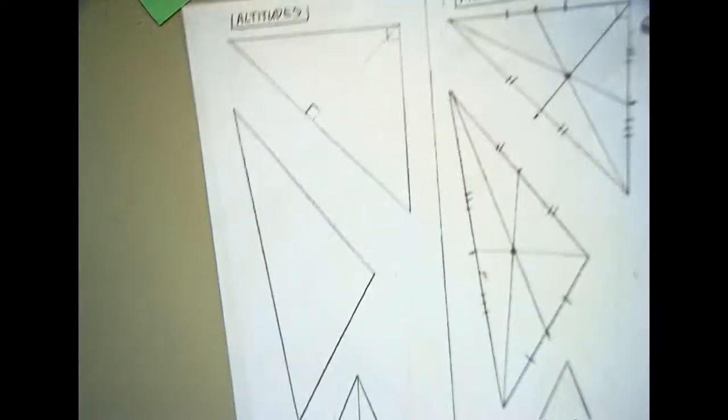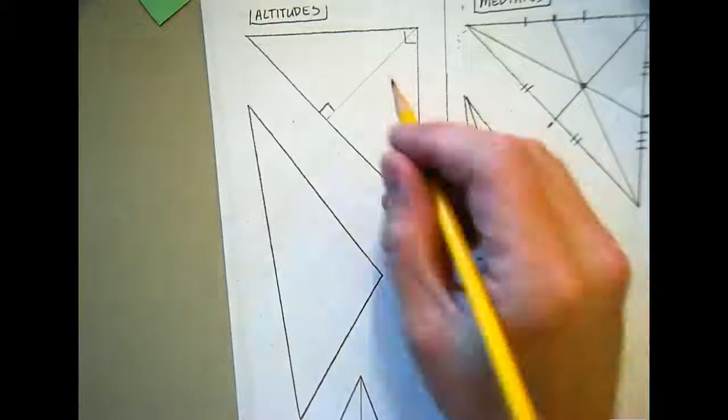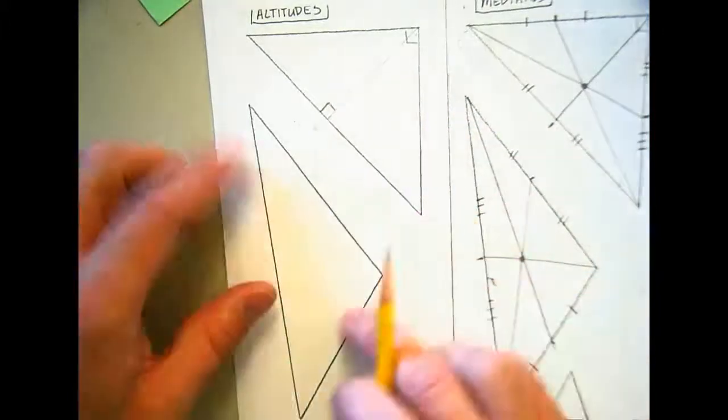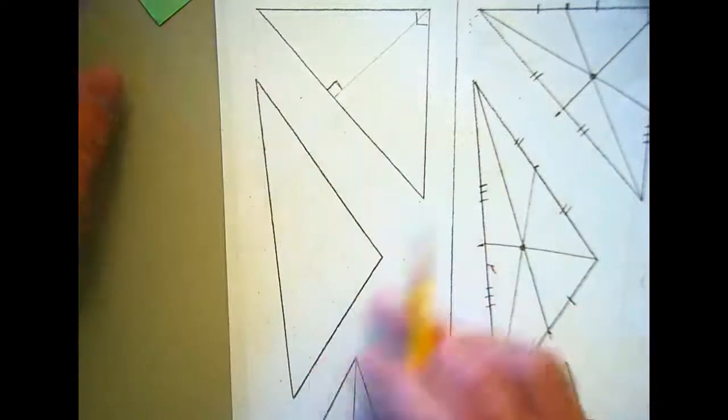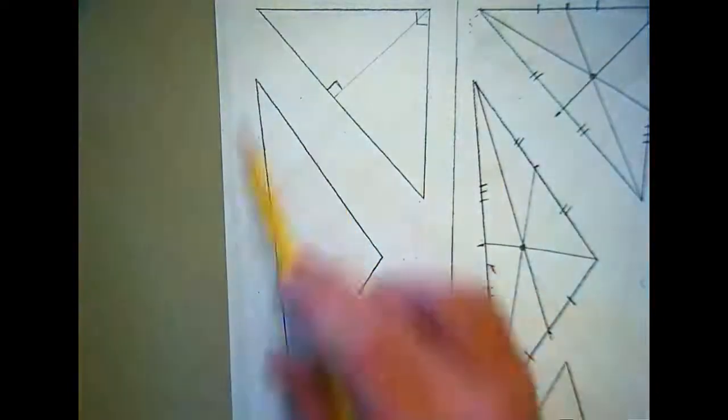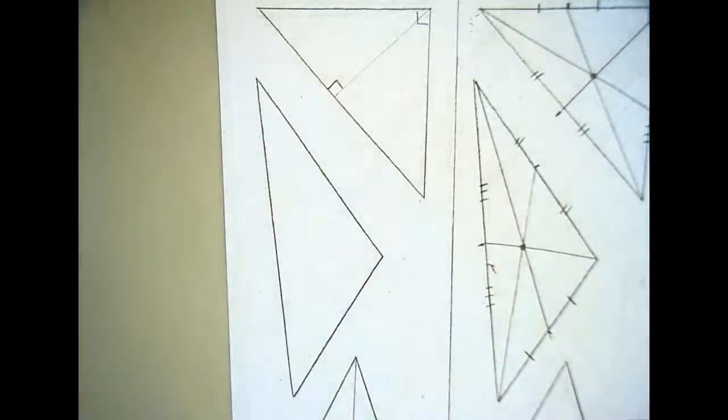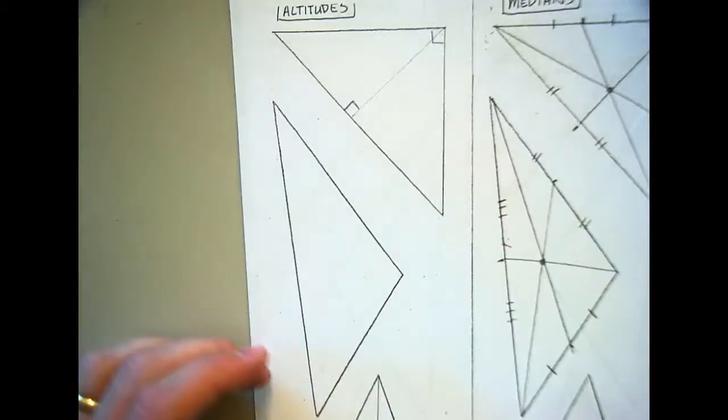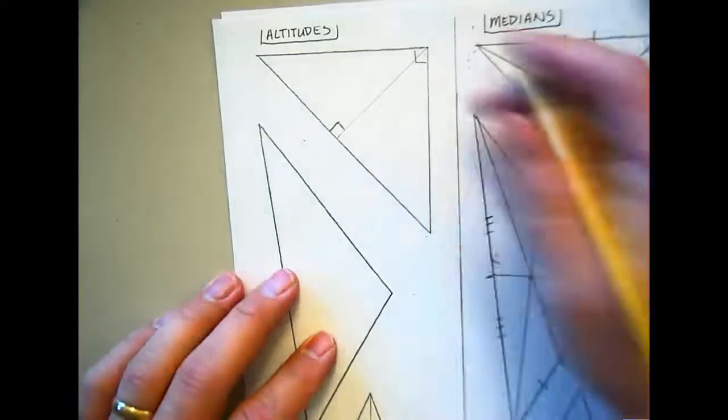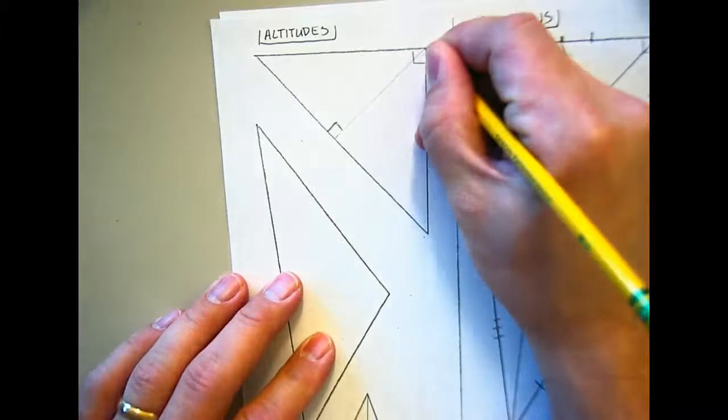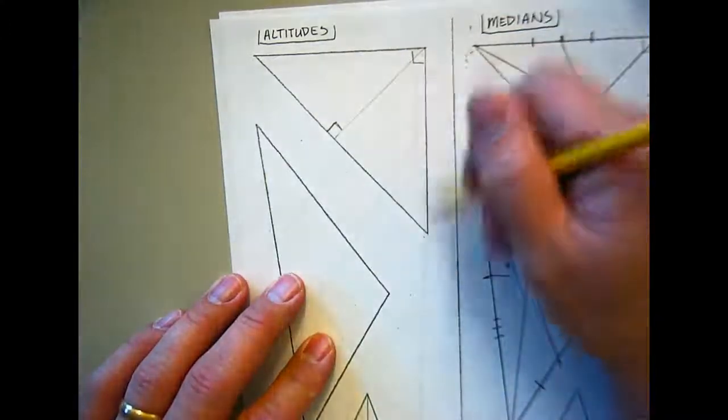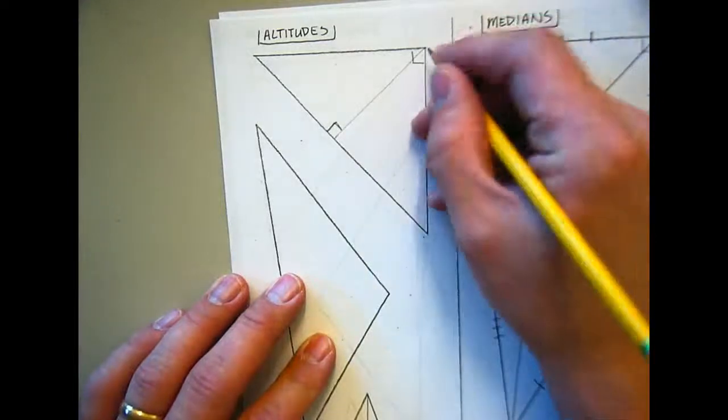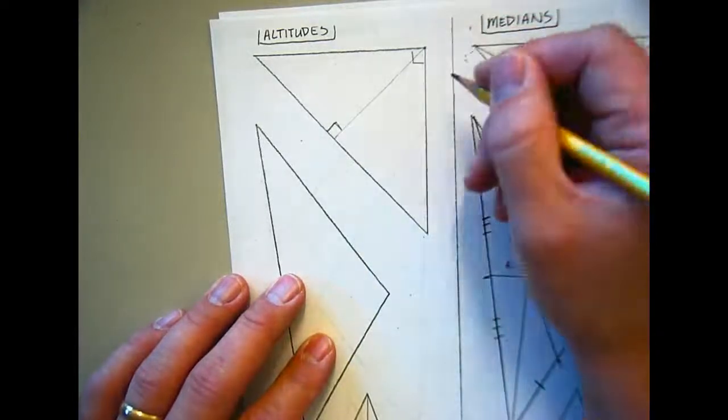So it's where a line would come out of this angle and hit this side at a right angle, the opposite side. Try to sketch that in and compare it with your neighbor. Slide it down. And voila. There we've got it. And I want you to, we'll come back to this one after we do this one. Right now, I'd like you to, on this triangle, I want you to try to figure out as many altitudes from your angles on your obtuse triangle as you can.